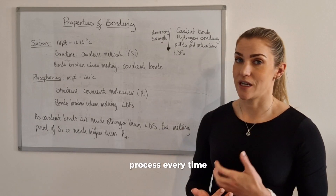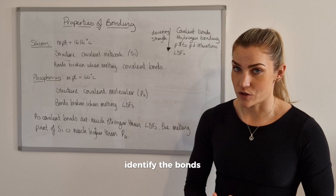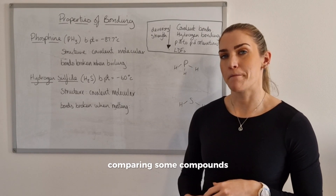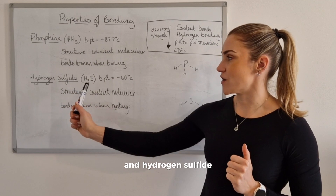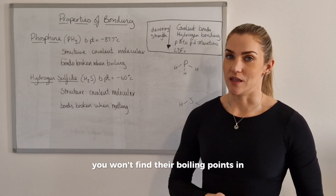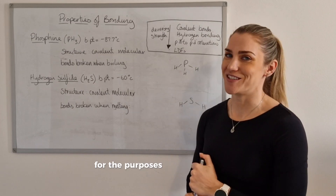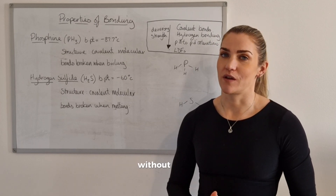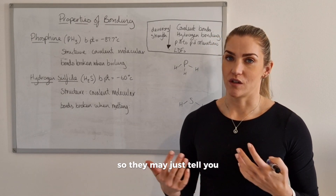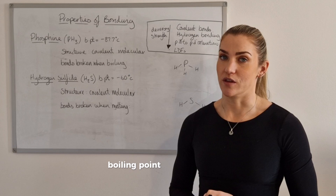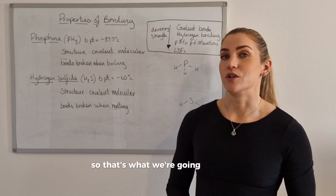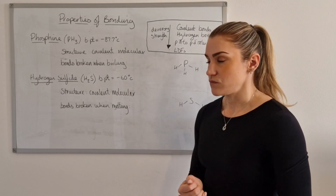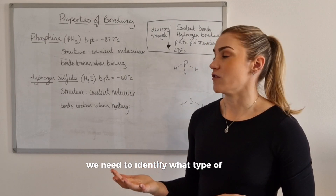It's the same process every time: identify the structure, identify the bonds or attractions that are broken, and then give the statement as to which one is stronger. Now we're going to look at comparing some compounds — phosphine (PH₃) and hydrogen sulfide (H₂S). You won't find their boiling points in the data booklet, but the SQA will either tell you what they are in the question or just tell you which one has the higher boiling point. They may tell you that hydrogen sulfide has a higher boiling point than phosphine and ask you to fully explain why. The first thing to do is identify the structure — they are both covalent molecular, so now we need to identify what type of bonds are broken when they boil.